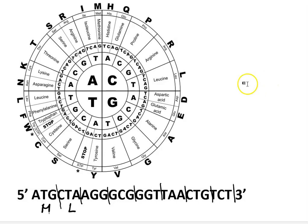We've got AGG. So A in the first position, G in the second position and a G in the third position and that gives us the amino acid arginine, which is abbreviated with an R.